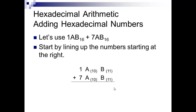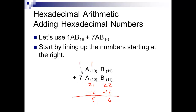We're adding 1AB and 7AB in hex. I've written the numerical equivalents of A (10) and B (11) next to them for easier addition. B plus B, or 11 plus 11, is 22 — that's base or larger (bigger than 16) — so 22 minus 16 is 6, carry a 1. Then A plus A plus 1, or 10 plus 10 plus 1, is 21 — 21 minus 16 is 5, carry a 1. Then 7 plus 1 plus 1 is 9 — not base or larger — so bring the 9 down. The answer is 956 in base 16.